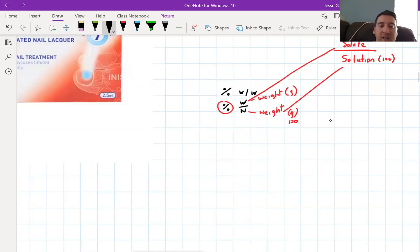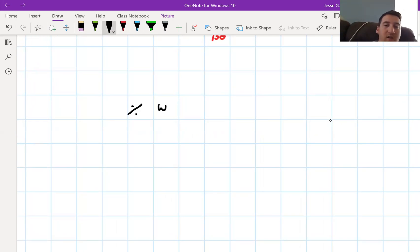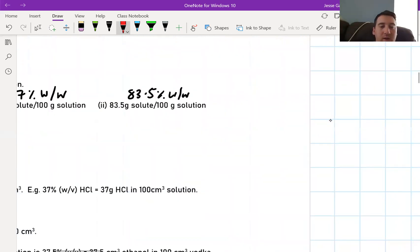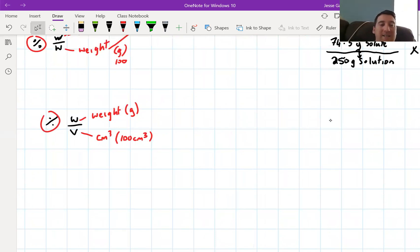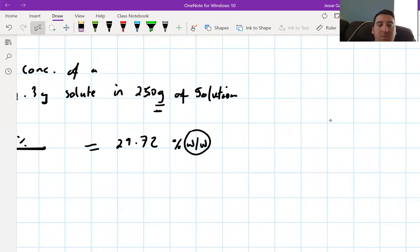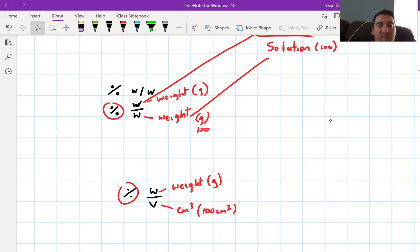The second percentage calculation is percentage weight per volume. Our solute is measured in weight over our volume, which is measured in cm cubed. Because it's a percentage, we're always talking about 100 centimeters cubed of solution. It's the exact same thing you do. Instead of writing W per W at the end, you write W per V. Same way of doing it. We've got a few for you to practice.